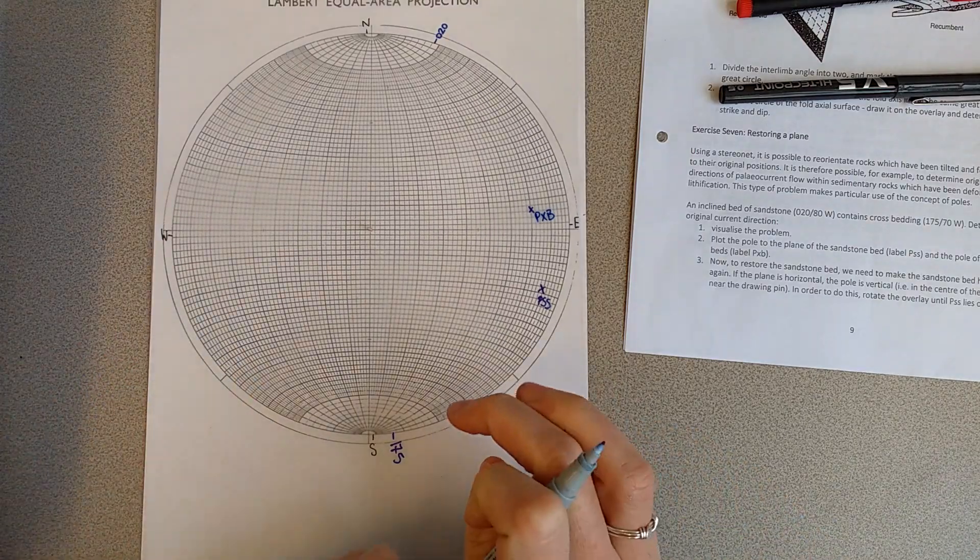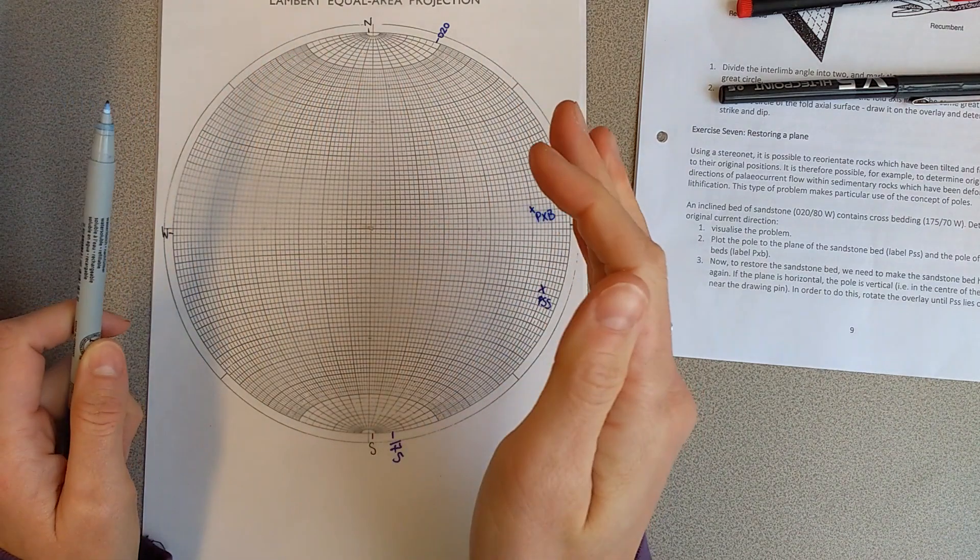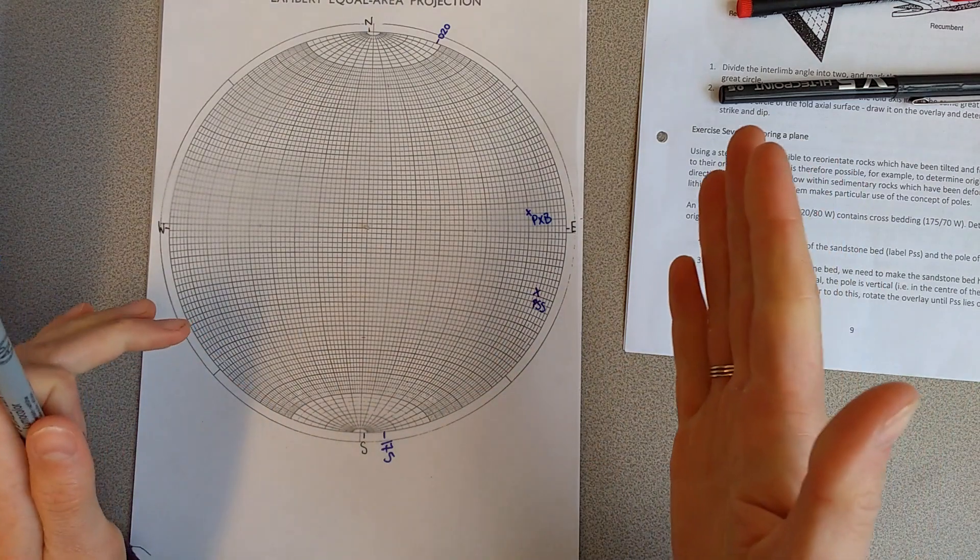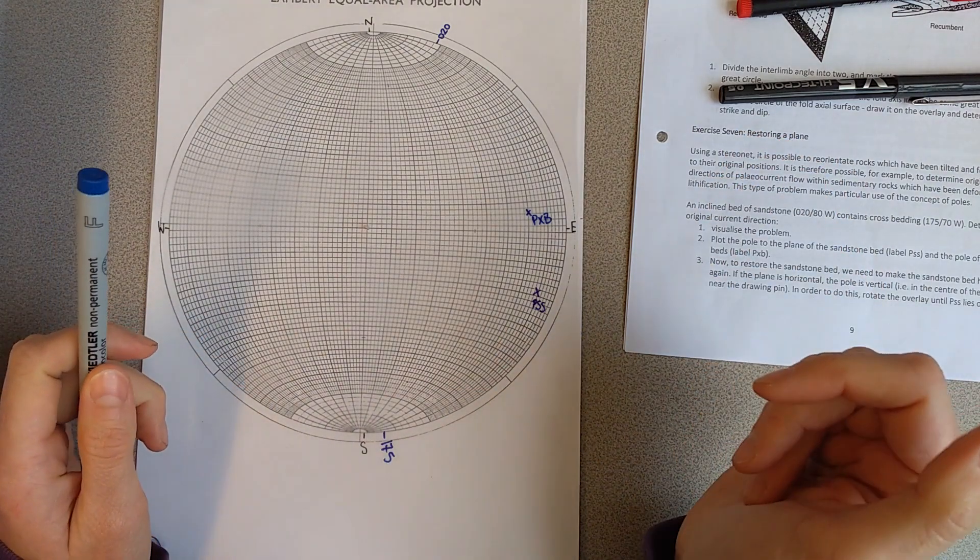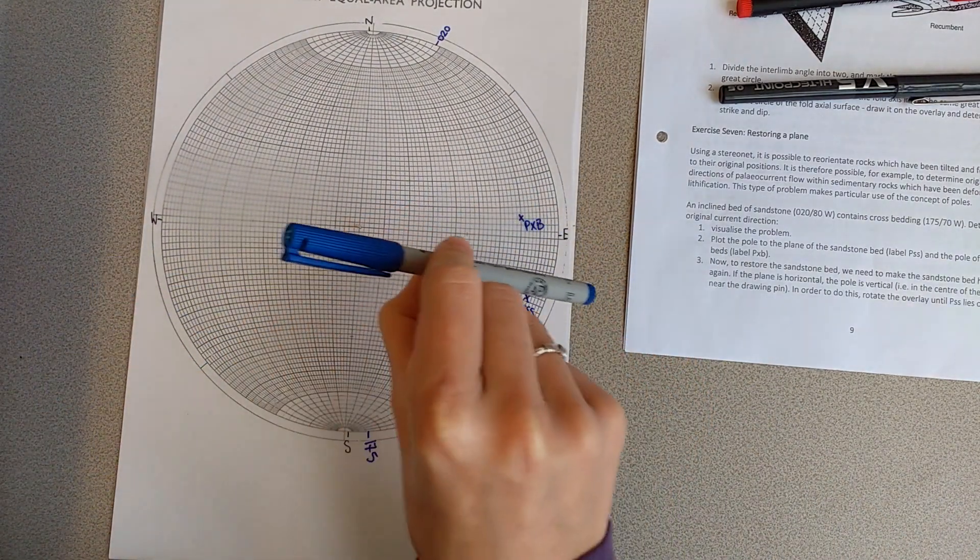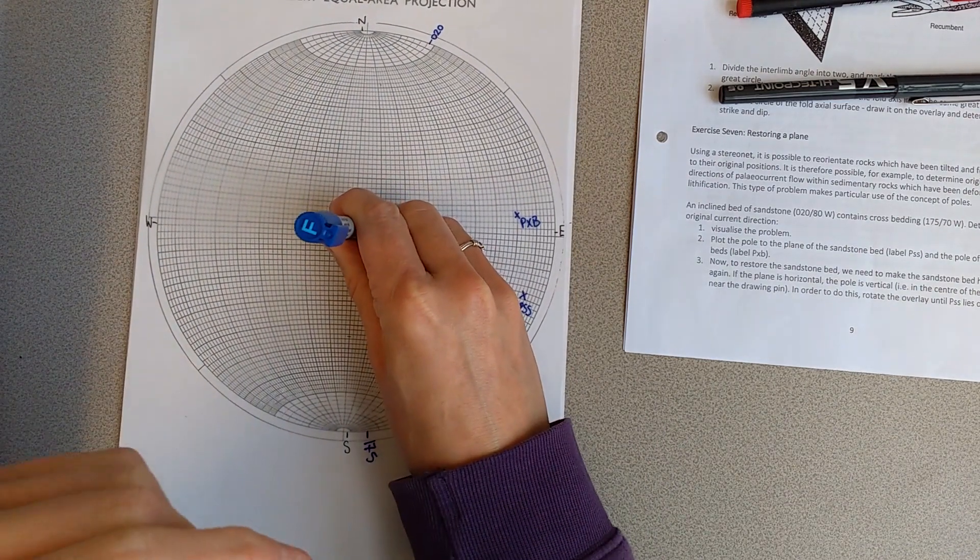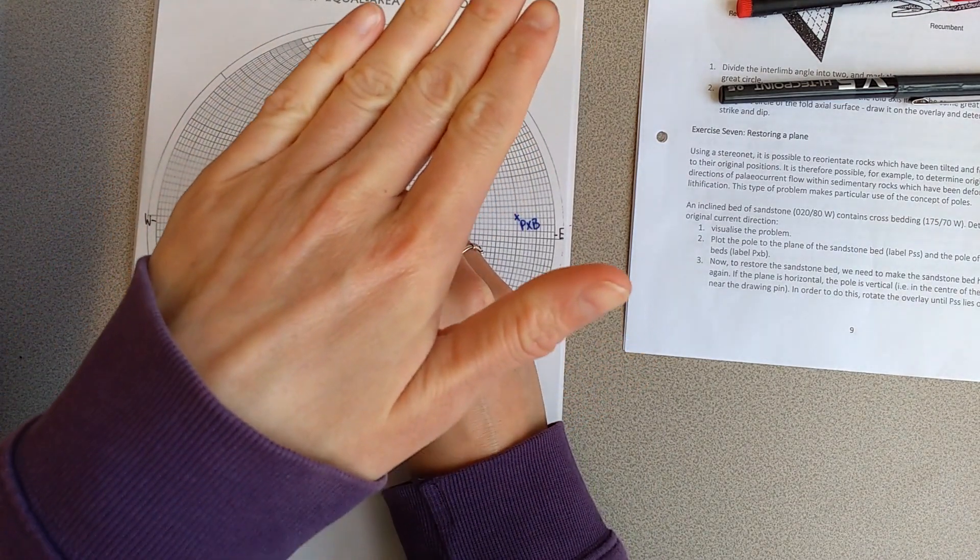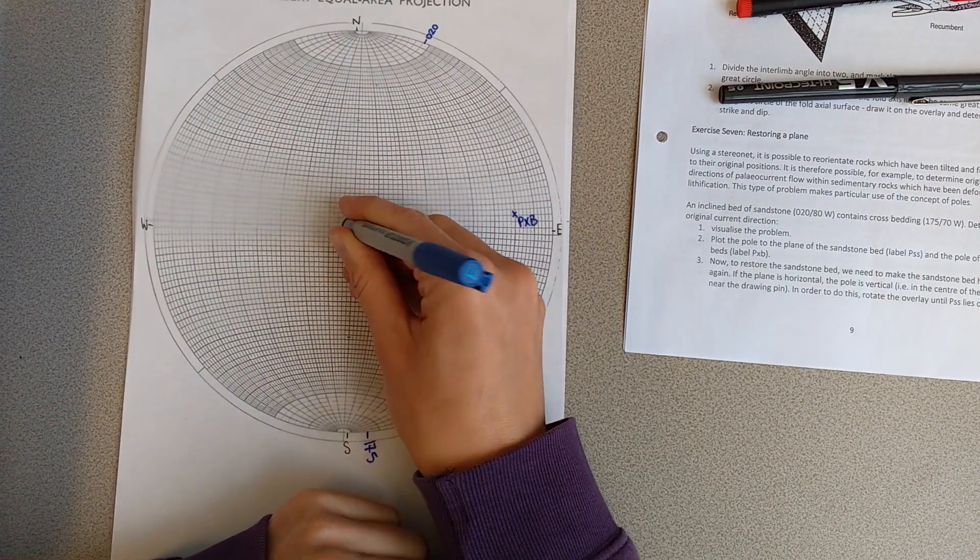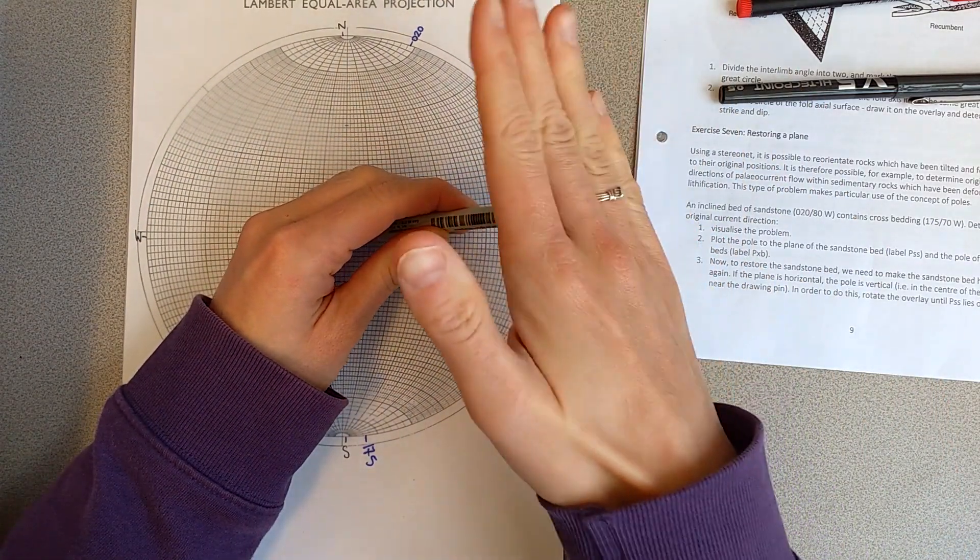That is the position of these beds, they're dipping down. We want to restore the poles from pointing basically out this way to being back to the middle of the stereonet, because if the pole is vertical then the plane is going to be horizontal which is what we want. At the moment our pole is leaning over here so our plane is tilted.